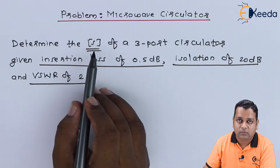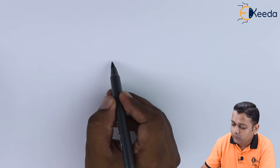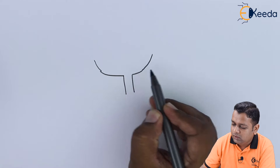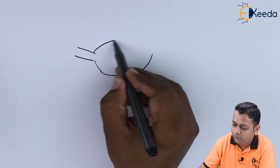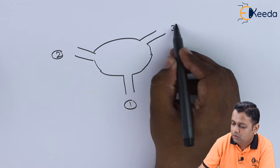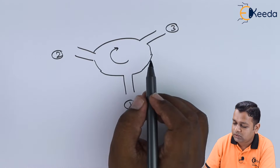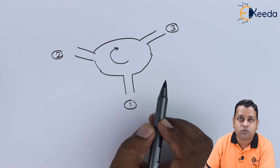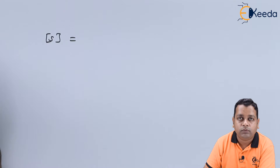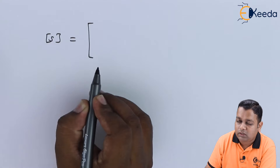We have to determine the scattering matrix. Since it is a three-port circulator, we can draw a diagram with port number 1, port number 2, and port number 3. By Faraday's rotation principle, we have circulation inside this three-port device. The corresponding scattering matrix for this three-port device is of the order 3 by 3, with three rows and three columns.